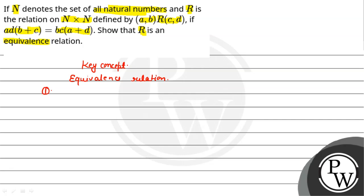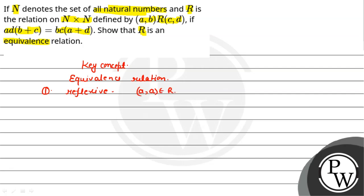So first of all, reflexive — what is the condition? We have to see reflexive, then symmetric, then transitive. For reflexive, the condition is that (a,a) belongs to R, meaning every element is related to itself.